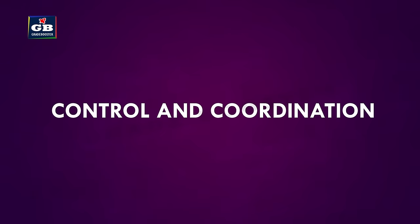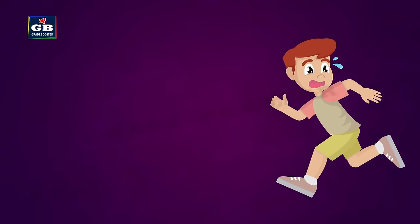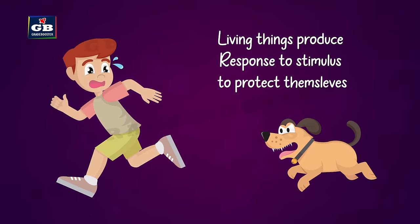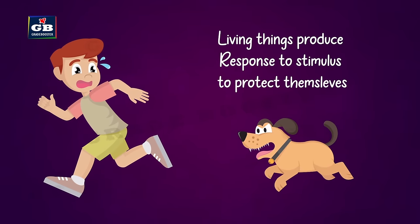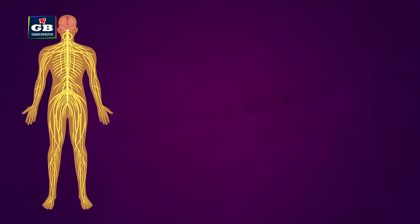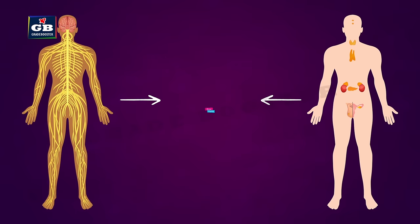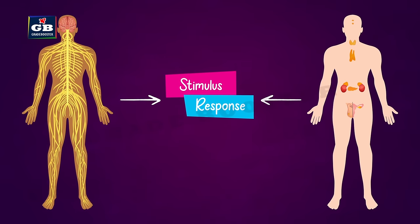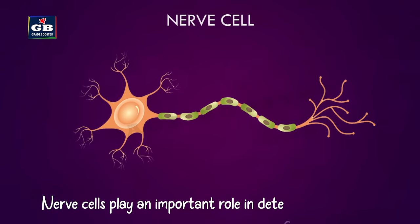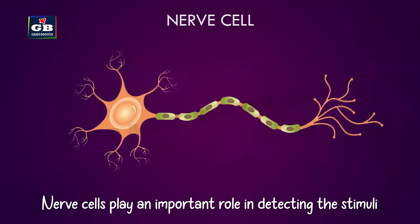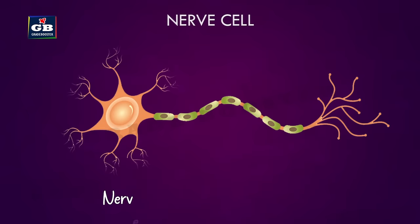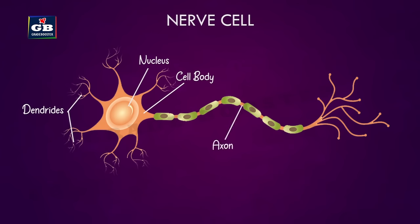Control and coordination: living things produce responses to stimuli to protect themselves. The nervous system and hormonal systems help organisms produce responses to stimuli. Nerve cells play an important role in detecting stimuli. Nerve cells are also called neurons. Each neuron has different parts: cell body, nucleus, dendrites, axon, and nerve endings.